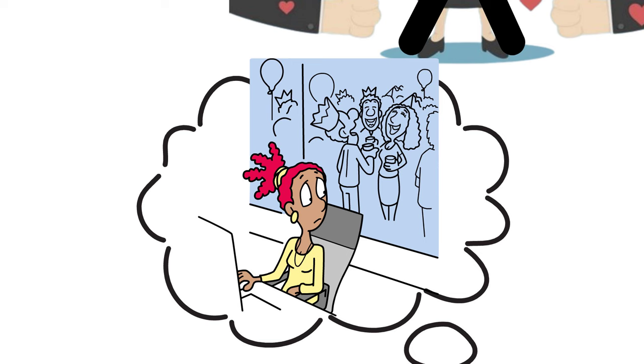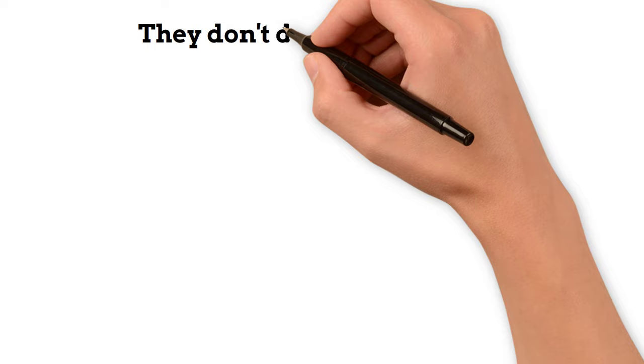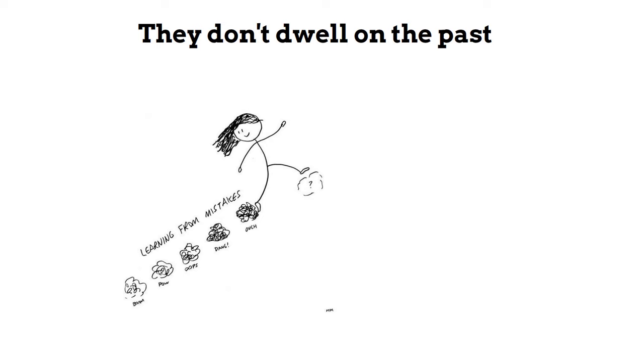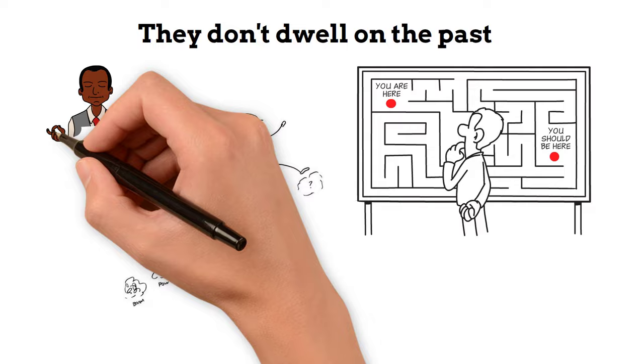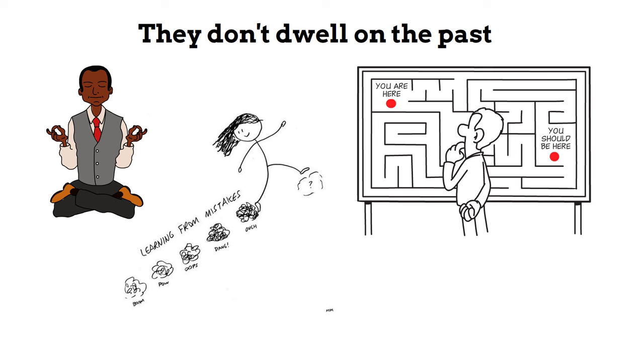Five: They don't dwell on the past. While it's essential to learn from past mistakes, mentally strong people focus on the present moment and look towards the future with optimism. Try practicing mindfulness or meditation to help you stay grounded and centered in the now.